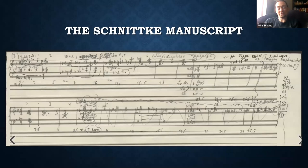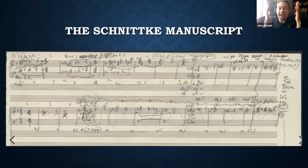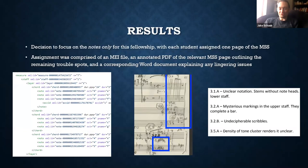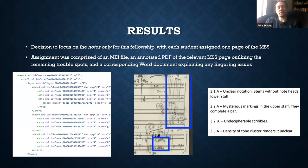We are mostly down to two staves, but there is a third stave coming in, and a percussion line between the second and third staves that gets no staff at all — all of this has to be accounted for in the code. Notes to himself appear all over the place, most in German and some in Russian. The students rose to the occasion admirably. Since this was very hard, we decided for the fellowship to focus only on getting the notes in. With four pages and four students, each student got one page and was responsible for an MEI file — at least 4,000 lines of code per page, sometimes more.